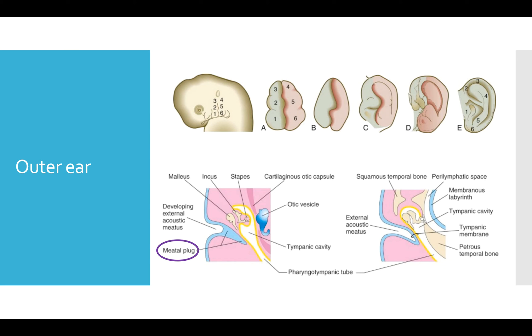Now, the pinna of the adult ear has origins in what's called auricular hillocks. Now, these are formed in both the first and the second pharyngeal arches. And fortunately, they are named for their adult structures. Auricular hillock 1 is called the tragus, 2 is called the helix, 3 is called the simba conca,